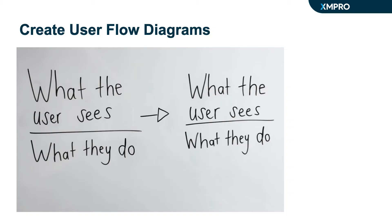The notation we use looks like this. Each block represents an interaction. Above the bar is what the user sees and below the bar is what they do. The arrow indicates that they move to another page after performing the action. You can also use dotted lines to indicate alternate actions.